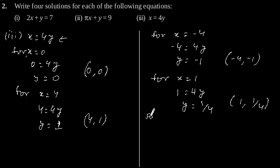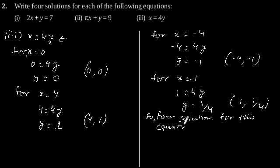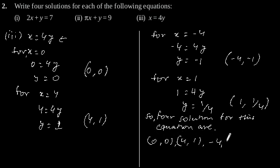So the four solutions for the equation x equals 4y are: (0, 0), (4, 1), (minus 4, minus 1), and (minus 1, minus 1/4).